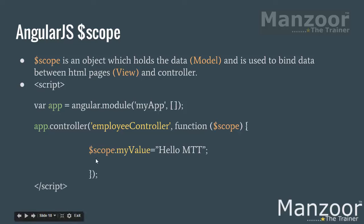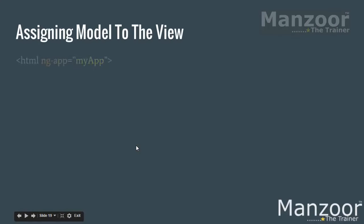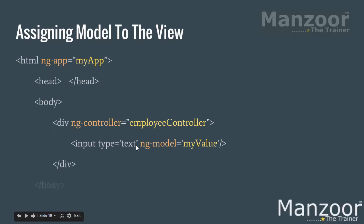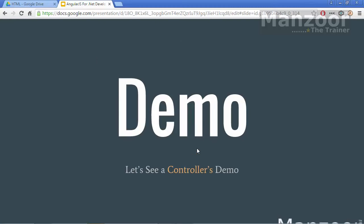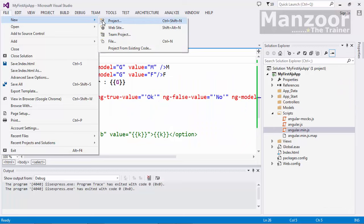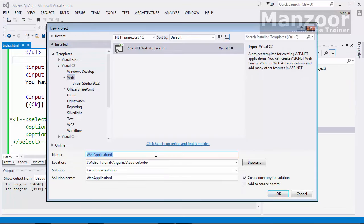In the `$scope` I am storing a variable called `myValue` as a model and assigning a value to it. So this is the module, this is the controller, and this is the model that I am trying to access. Now let us see a demo for this controller.